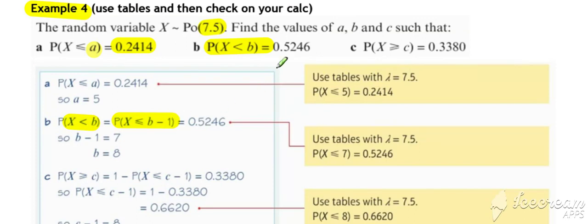We can then find the corresponding value to our probability, which in this case is equal to seven, and that's b minus one, so therefore b is equal to eight.